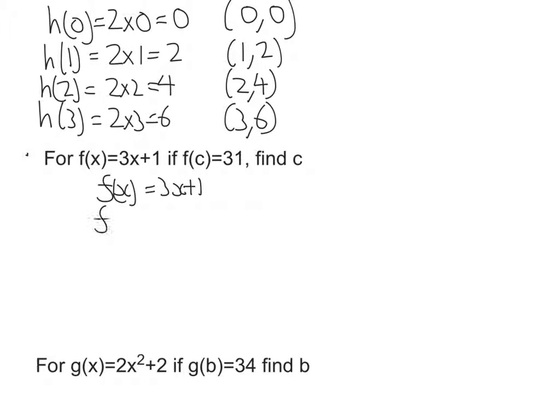First thing I'm going to do is put in c. So f(c), I replace all my x's with c's, so it's going to be 3c + 1. Now we also know that f(c) = 31. So f(c) equals 31 and 3c + 1. Let's put those two things together.